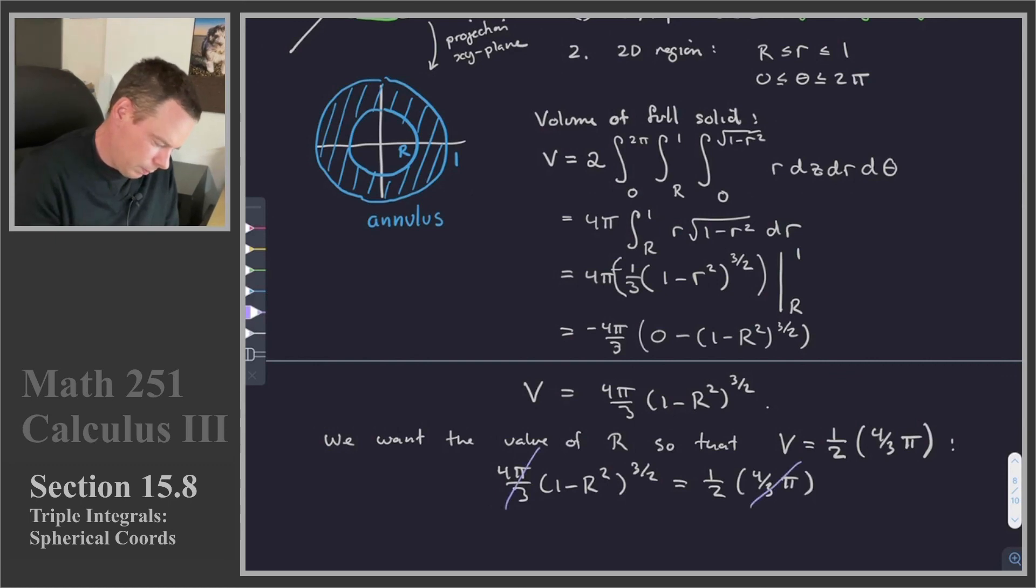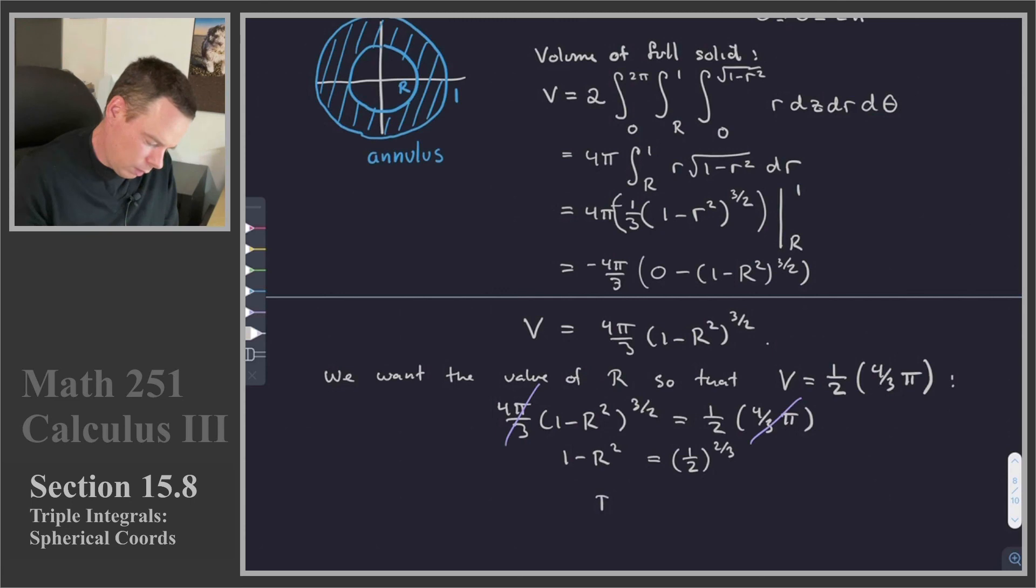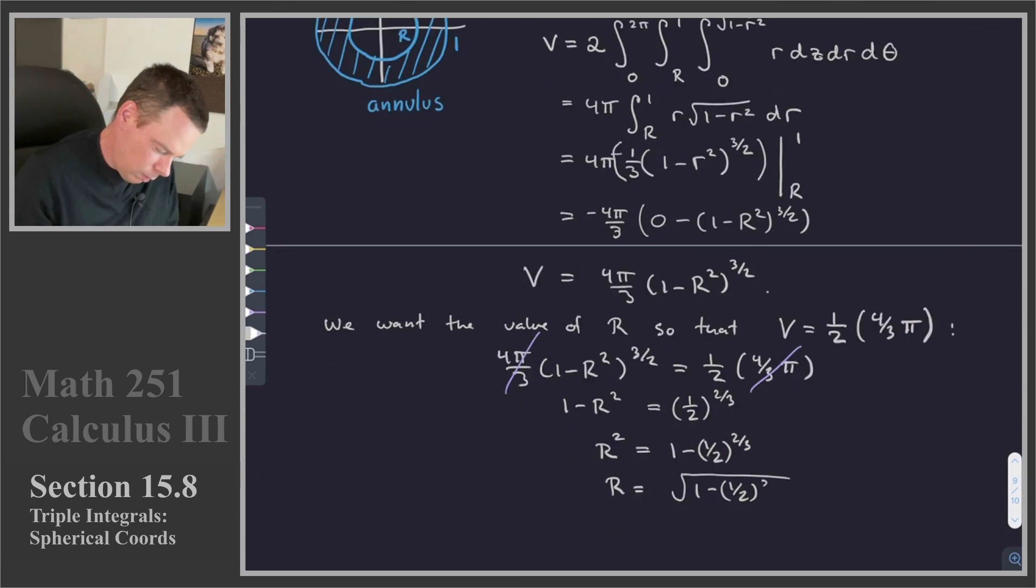So we can cancel off the 4 thirds. And what we get is that 1 minus r squared is equal to, and I'll take the 2 thirds power of both sides, so that's 1 half to the 2 thirds. And then we can solve for capital R. R squared is equal to 1 minus 1 half to the 2 thirds. Or r is equal to the square root of 1 minus 1 half to the power of 2 thirds. And that is approximately 0.6083.